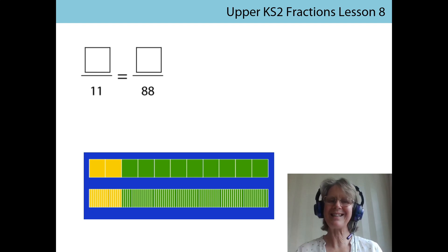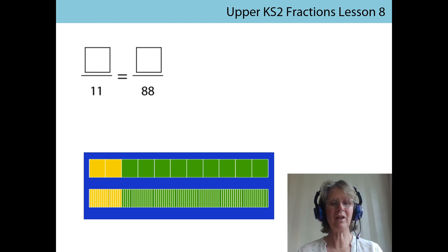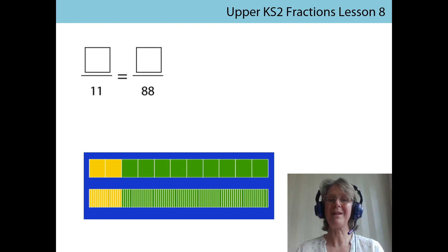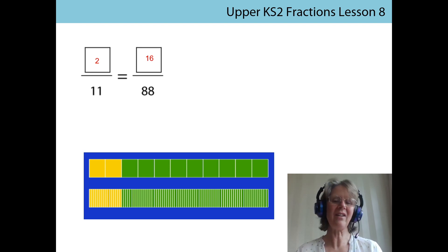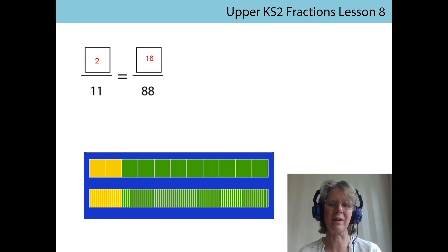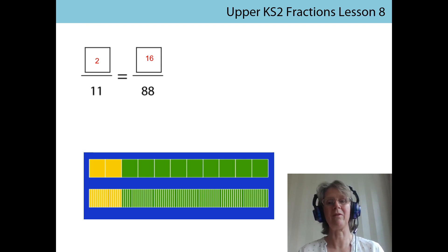We're back to the same problem with the two empty numerator boxes, but this time I've changed the image and given two elevenths. My scale factor is still going to be 8, so if I've gone for two elevenths, two times eight is 16 — giving 16 over 88. I don't think that's the end of it; I think I could find other solutions. Why don't you have a go and show your teacher all the different ways? That would be a really interesting challenge.